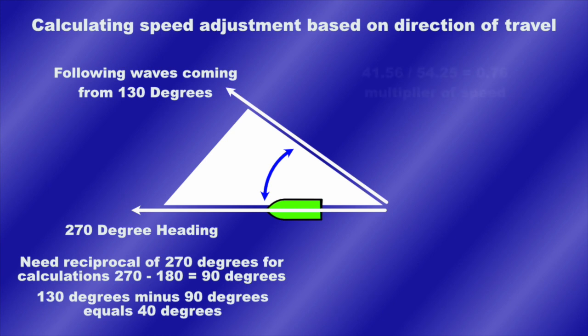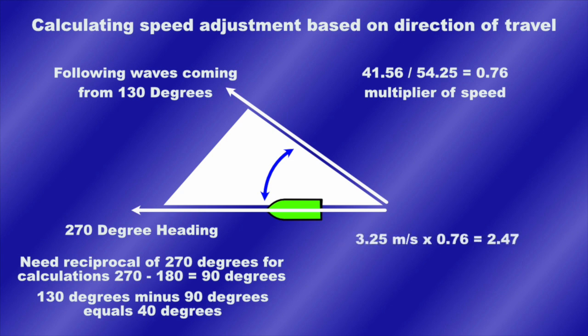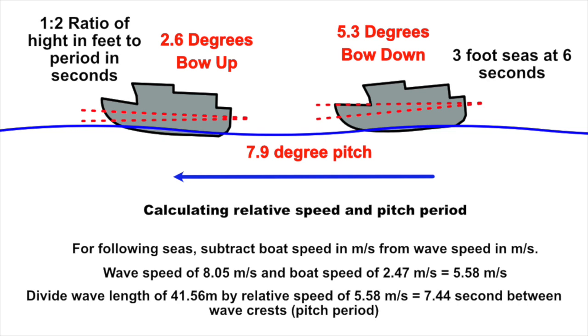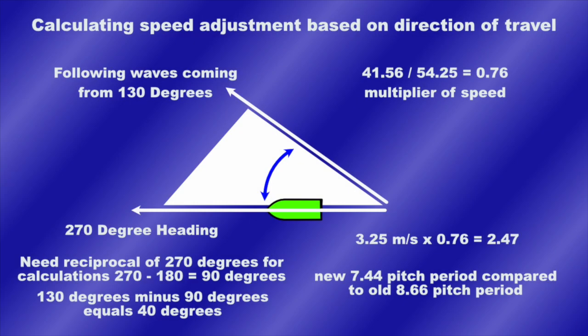In our final speed adjustment we take the 41.56 original wavelength and divide it by the 54.25 new wavelength essentially via our mode of travel at 270 degrees west. We have a total of 0.76 multiplier of speed. We take our boat speed of 3.25 meters per second multiplied by that we get 2.47 and then we add that into our old formula. We take our wave speed of 8.05 meters per second with our new speed of 2.47 meters per second and that gives us the relative speed of 5.58 meters per second. Once again we divide that out and we end up with 7.44 seconds between wave crests. So that new 7.44 pitch period is compared to the old 8.66. So it's a little bit shorter but you can see how your direction of travel compared to which way the waves are coming from affect the virtual speed of your boat and how often you're going to be going over a crest.